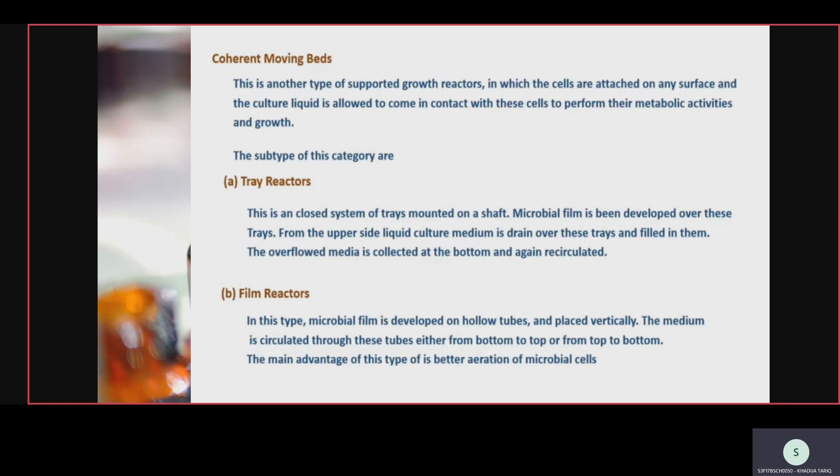Tray reactor is a closed system of trays mounted on a shaft. Microbial film is developed over these trays. From the upper side, liquid culture medium is drained over these trays and fills them. The overflow medium is collected at the bottom and again recirculated. In the film reactor, the microbial film is developed on hollow tubes placed vertically, whereas in tray reactors the trays are placed horizontally.